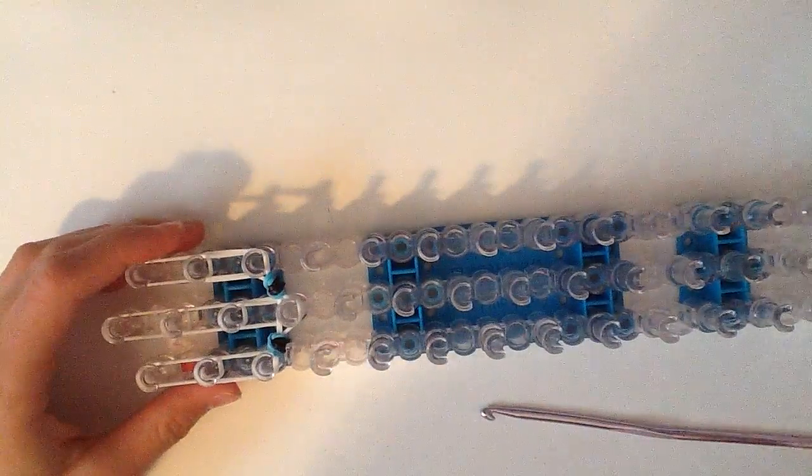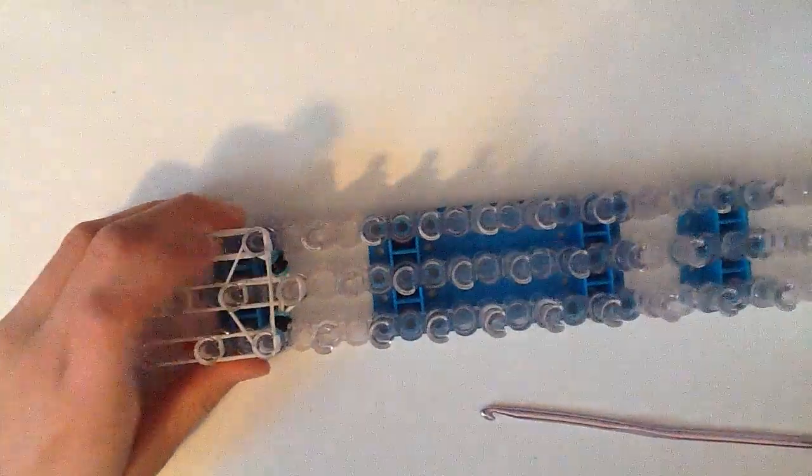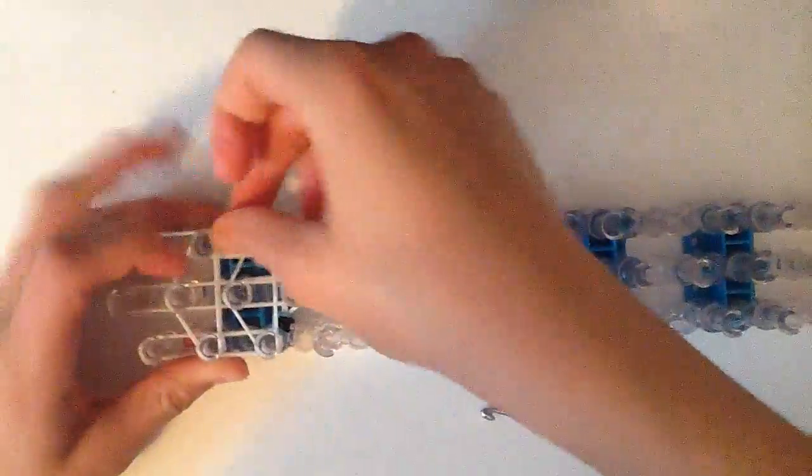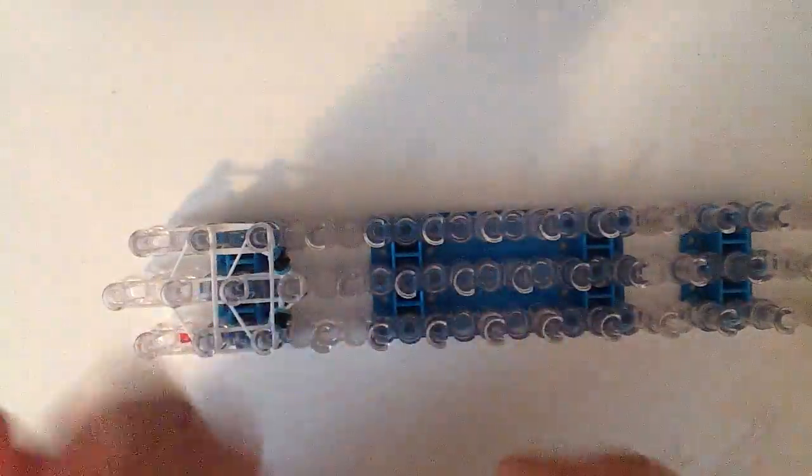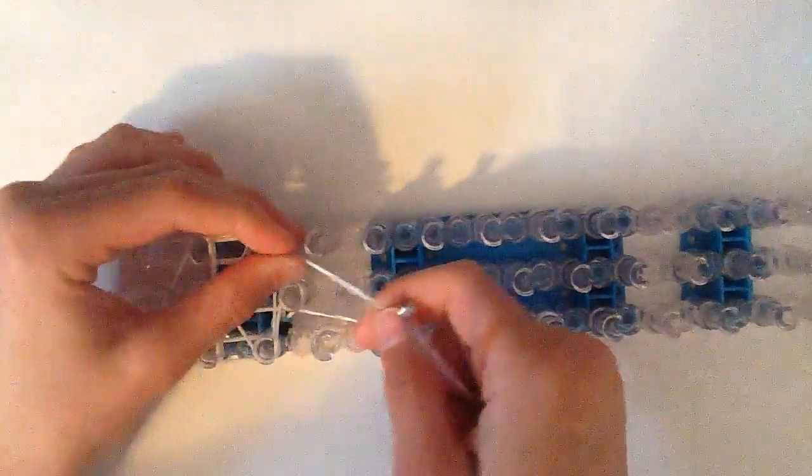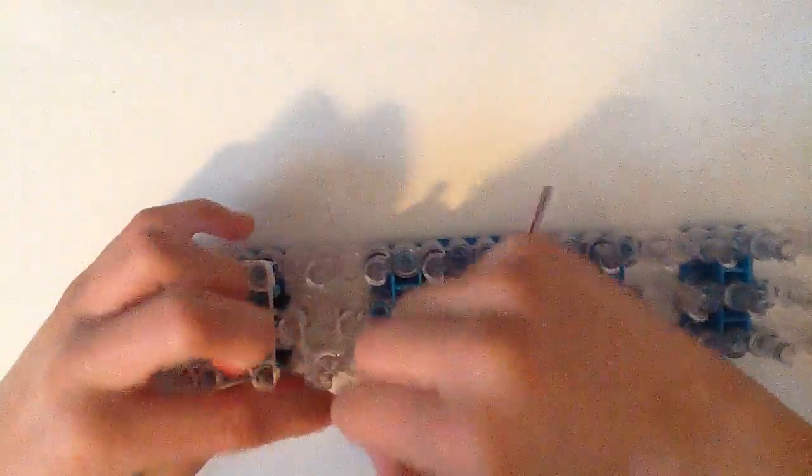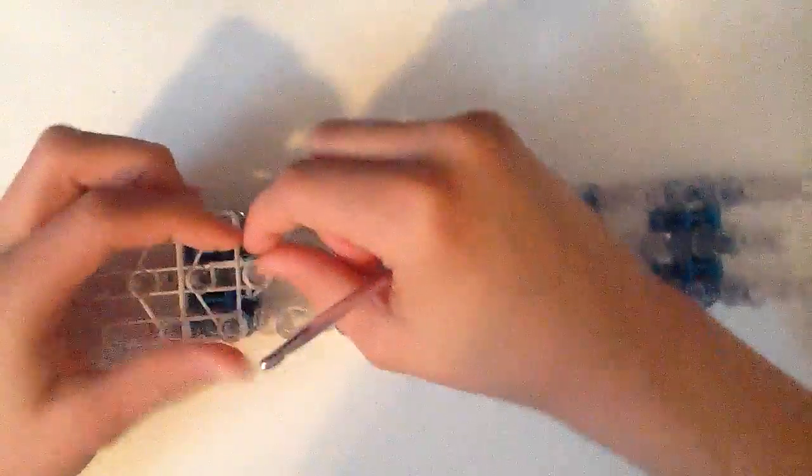Now you're going to take 2 bands and make the holding bands. Triangle and a triangle. And we're going to add the cap band, which is a band looped 4 times around the center peg right here.